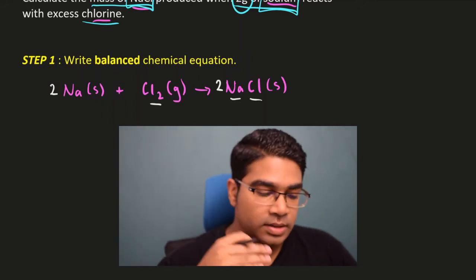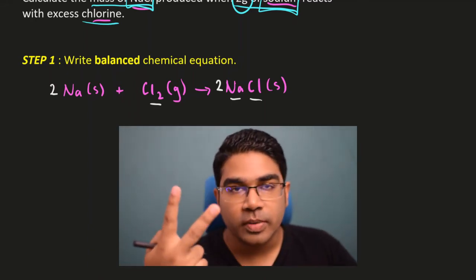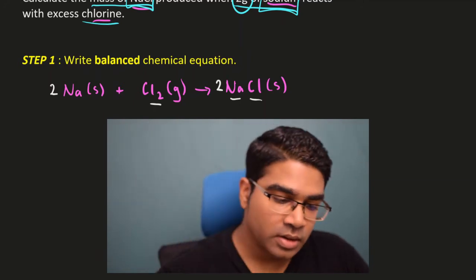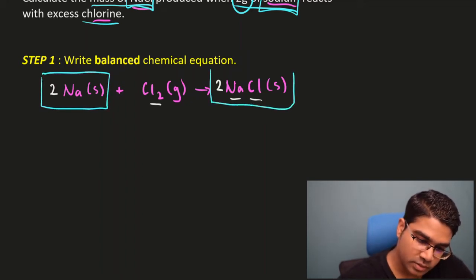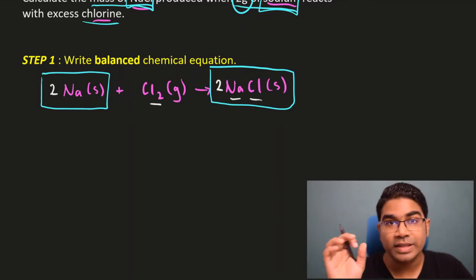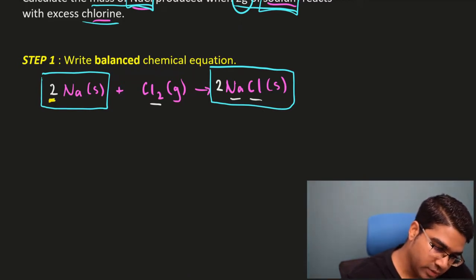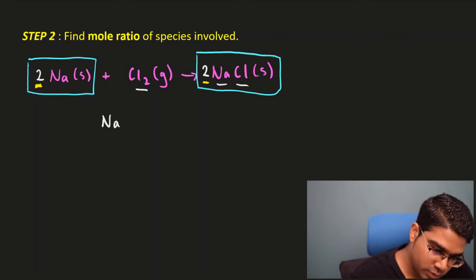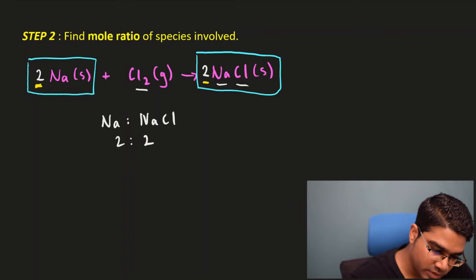The mole ratio is obtained from the balanced chemical equation — this is why step one is crucial. Sometimes they give you an already balanced equation, so you skip step one and go straight to step two. The mole ratio is the number in front of each species after balancing. Looking at sodium and sodium chloride, we have 2 in front of each, so the ratio is 2 to 2, which simplifies to 1 to 1.